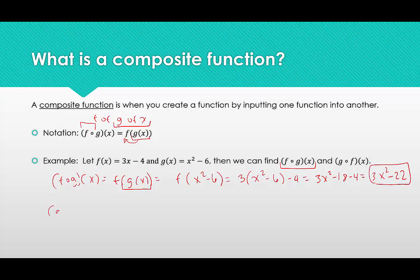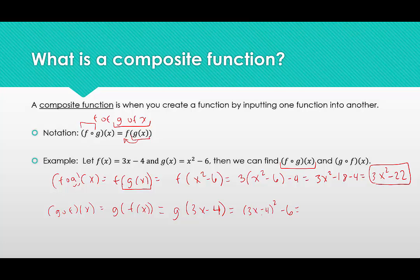That gives 3x² - 18 - 4, and we end up with 3x² - 22. Now looking at g of f of x, we start with f(x) = 3x - 4, and anywhere in g that we see an x, we replace it with 3x - 4. So we get (3x - 4)² - 6. Expanding: the first term squared is 9x², minus the product of the two terms doubled gives -24x, plus the second term squared gives 16, minus 6 — giving us 9x² - 24x + 10.